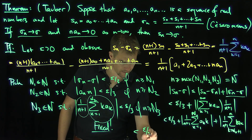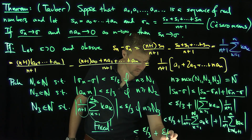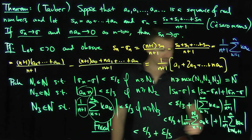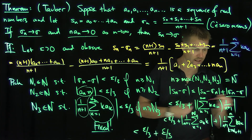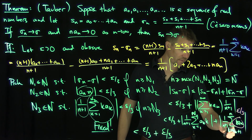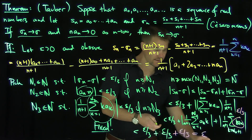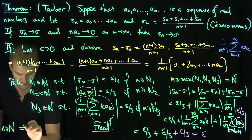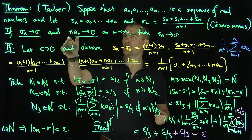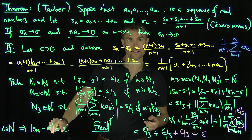By our choice of N_3, the first piece is less than ε/3. Past k = N_2, we know that |n·a_n| < ε/3, so all the terms in the second sum are individually less than ε/3, and we have fewer than n such terms — so that sum is also less than ε/3. All three pieces together give us |S_n - σ| < ε. Hence, if n ≥ N, then |S_n - σ| < ε, which proves that under the decay condition on the coefficients, we are actually summable to the same limit as the Cesaro limit. Thank you very much.